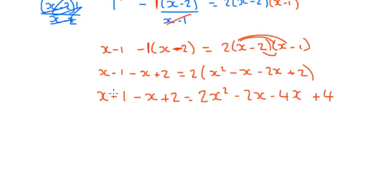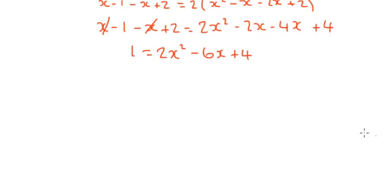And now we can collect everything together. So I've got an x and I've got a take away x, so they disappear. I've got a minus 1 plus 2, negative 1 plus 2 is 1. So just 1 on the left hand side. On the right hand side, I've got 2x squared. Take away 2x, take away 4x is minus 6x, and plus 4.